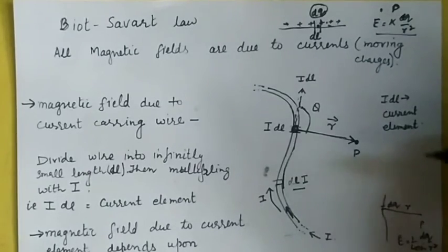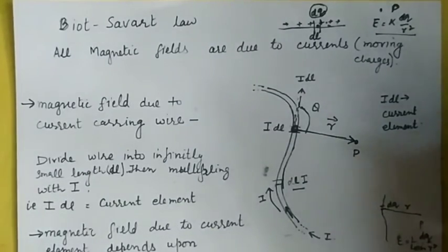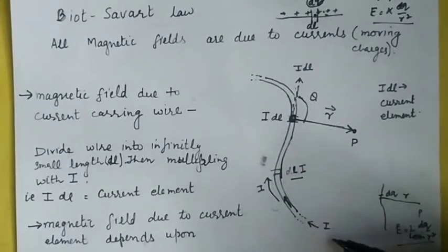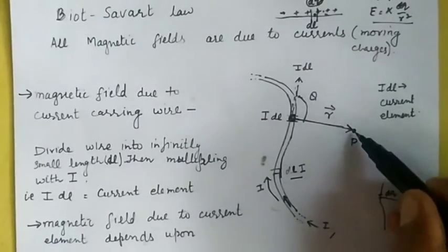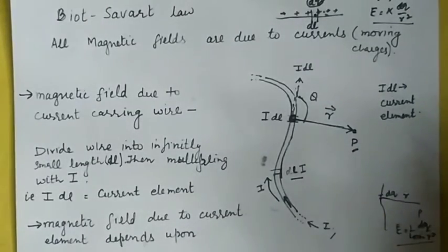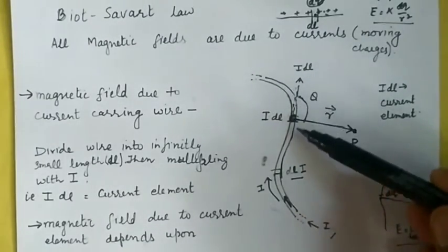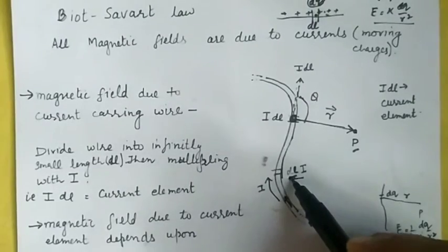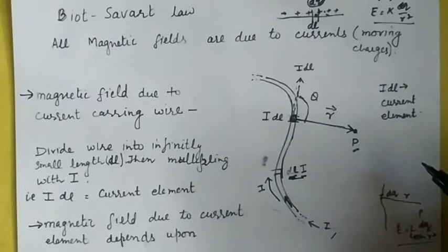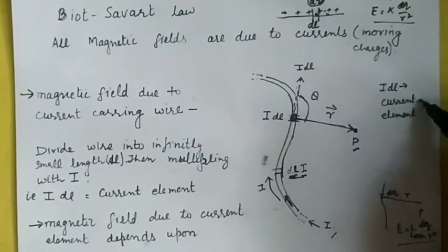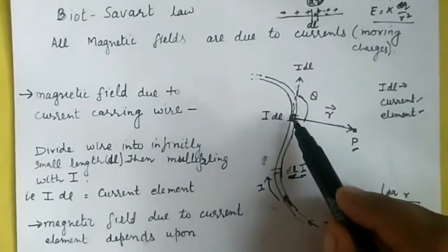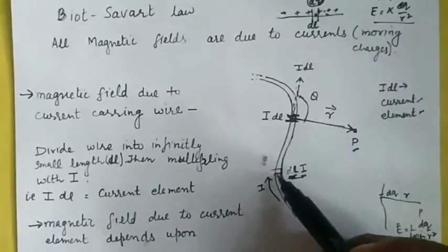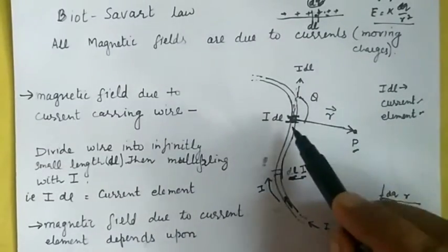On the same basis, we are going to derive Biot-Savart's law. Here, similarly, we have an irregular current carrying wire carrying a current I, and P is a point where we want to calculate the magnetic field. To do that, I divide this line into infinitely small lengths, each taken as dl. If you multiply dl with I, we get a physical quantity known as the current element. I choose any random current element, and the point of observation P is at a distance r from this current element.